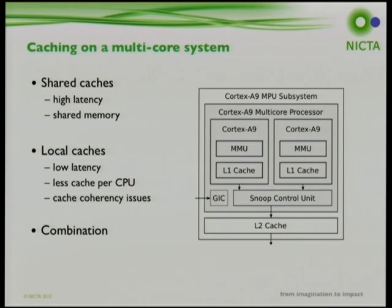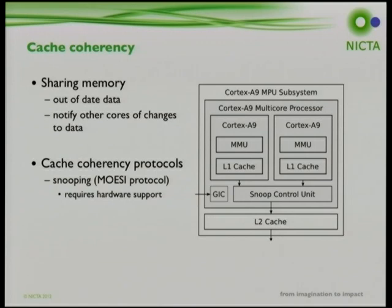Caches sit between main memory and CPU to improve memory latency and general performance. In multi-core systems, shared caches handle multiple simultaneous requests but are slower, while local caches are faster due to proximity to the core. Most systems use a combination of both, but this introduces cache coherency problems: if one A9 writes to memory stored in its local cache and a second A9 reads from its local cache, it reads the old stale value.